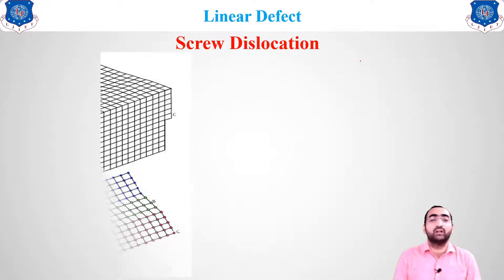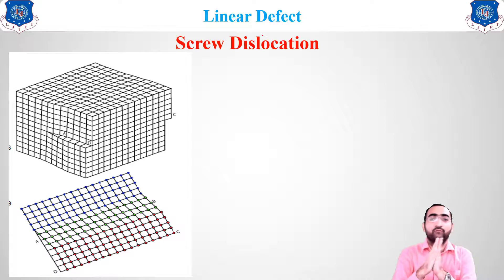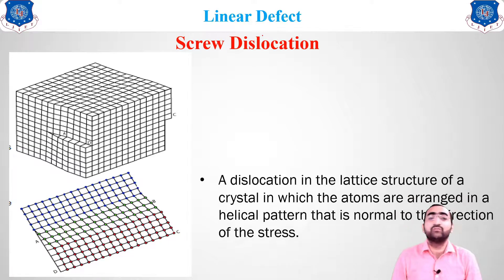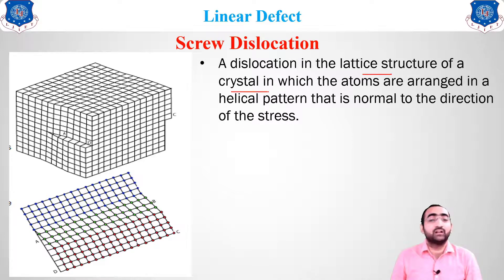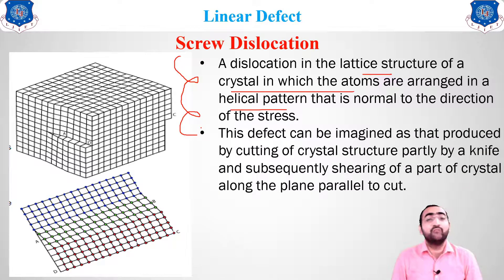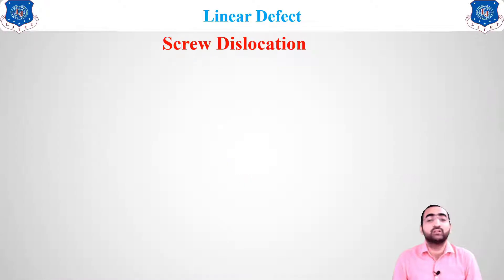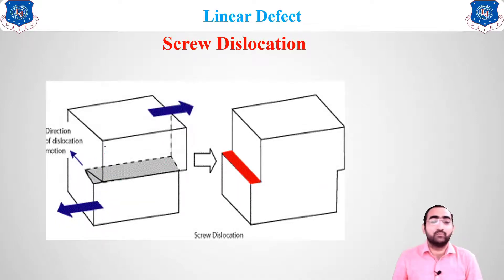The second type is screw dislocation. In screw dislocation, the lattice structure arranges atoms in a helical pattern. It can be imagined by taking a knife and inserting it inside a closed book — a bulging comes out, which is similar to how a screw dislocation forms. When a torsional (turning) force is applied, the material slips in a helical manner, causing screw dislocation.